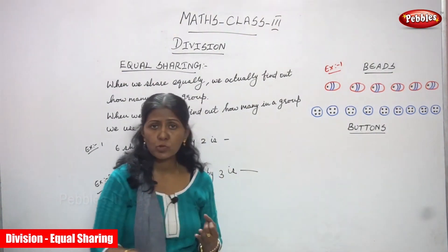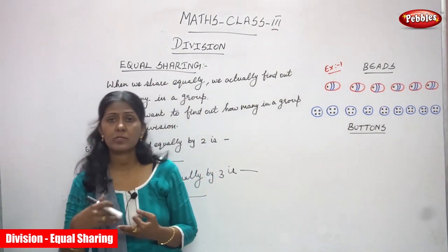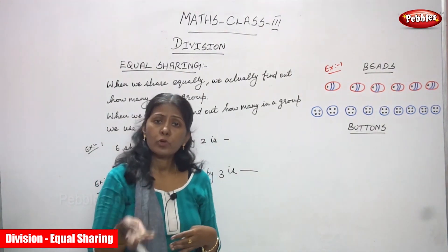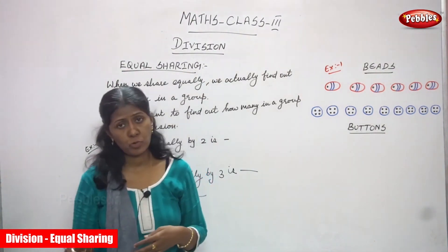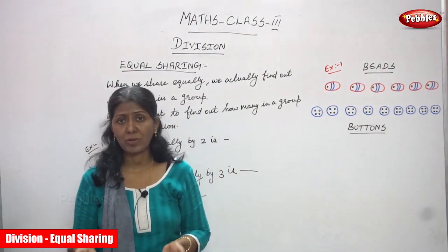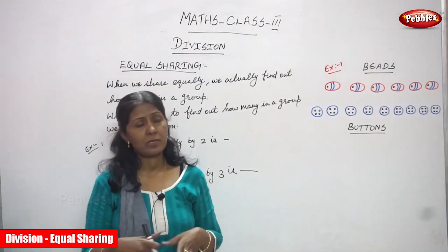The 1st child gets 2 chocolates, the 2nd child gets 2 chocolates, the 3rd child gets 2 chocolates, the 4th child gets 2 chocolates, and the 5th child also gets 2 chocolates. That is called equally shared.